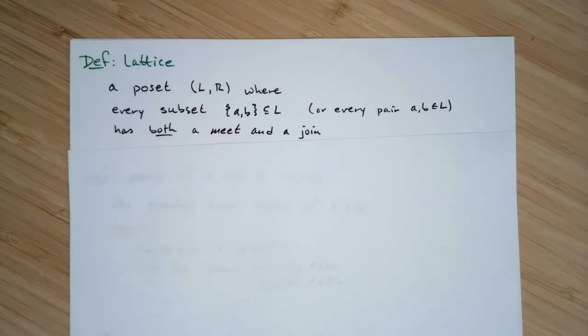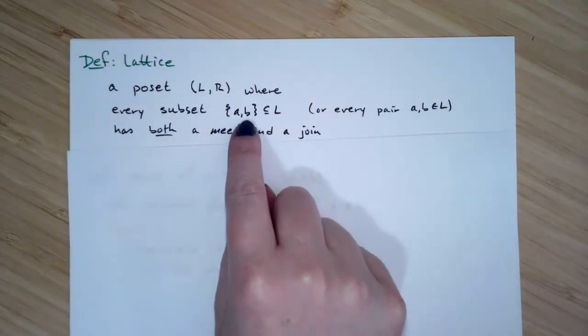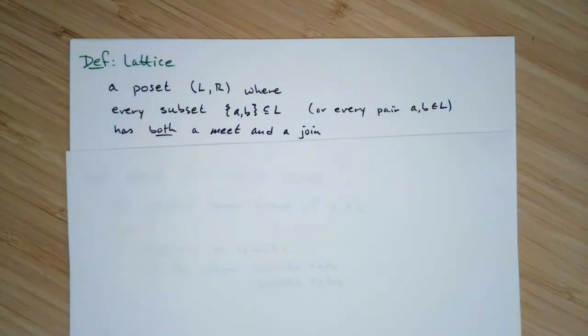Now we haven't defined what a meet and a join are yet, but we're going to do that in just a second. So here's the big takeaway. Every two elements, so any two elements you pick, and specifically they're any two different elements, which is why I went ahead and wrote them out in this set form right here, any two different elements in your poset,